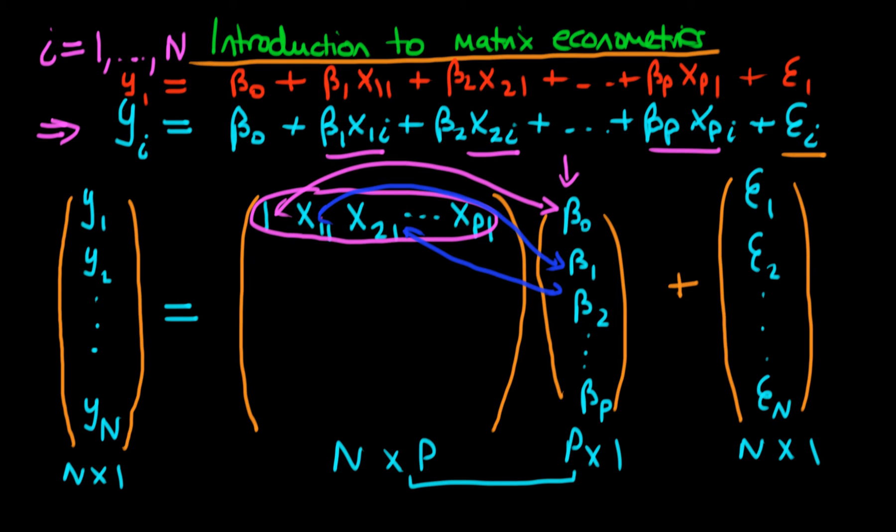The second row is very similar. The first component is still 1 because we have this constant in our model. The second part is x12, where the 2 indicates the second individual. The third part is x22, continuing to xp2. Multiplying this row times the parameter vector, we get y2 = β0 + β1x12 + β2x22 + ... + βpxp2 + ε2. We've recovered exactly what we had before.